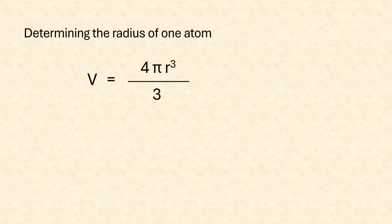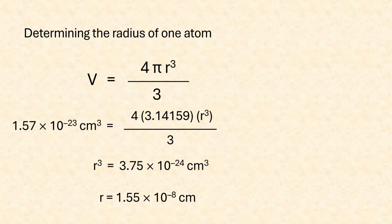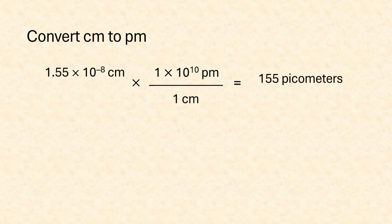Step 4 is to calculate the radius of each atom. We're going to make the assumption that each atom is a sphere, and we'll calculate the radius using the equation for the volume of a sphere: Volume equals 4 pi r cubed over 3. We plug in the volume of one atom that we got in step 3, use the value for pi — 3.14159 — and solve for r. So r is our radius of the atom in centimeters. We don't usually talk about atomic radius in centimeters, so in step 4b we'll convert that radius to picometers. 1 times 10 to the 10th picometers equals 1 centimeter. When you multiply, you'll find the atomic radius in picometers.